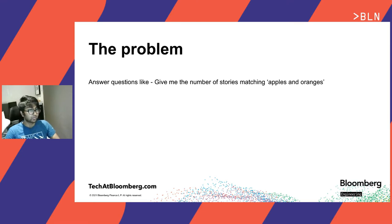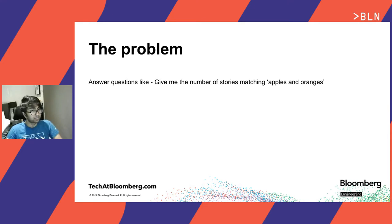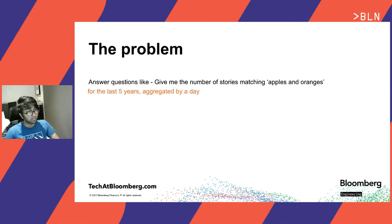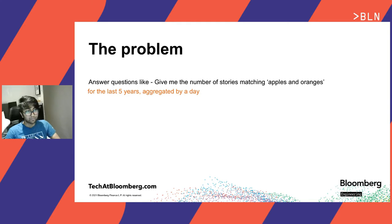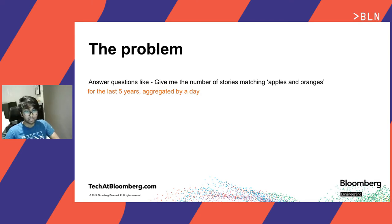Let's look at a query as written on the slide — answering questions like: give me the number of stories matching apples and oranges. This is a simple search query that any search engine can resolve. Things get more interesting when I add this bit — the query becomes: give me the number of stories matching apples and oranges for the last five years aggregated by a day. This has made the query much more complicated, because now we have elements of analytics and time series attached to the search query.